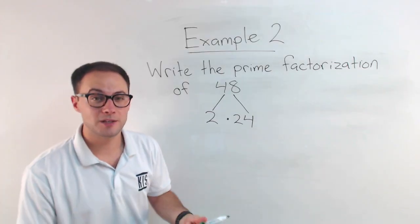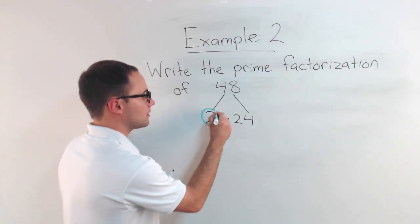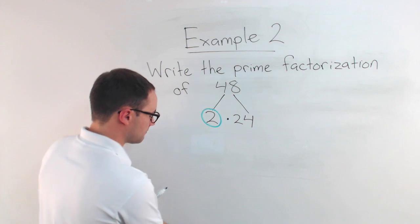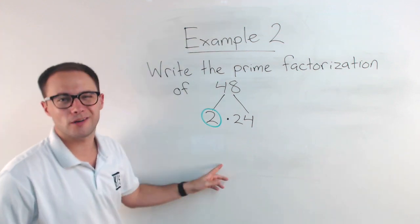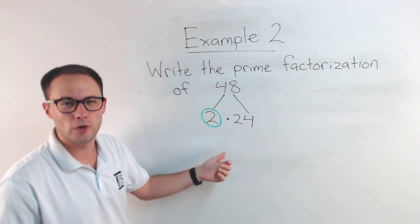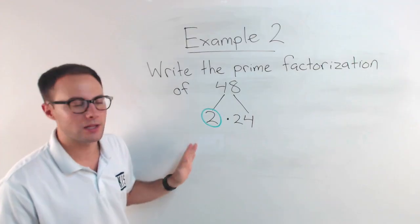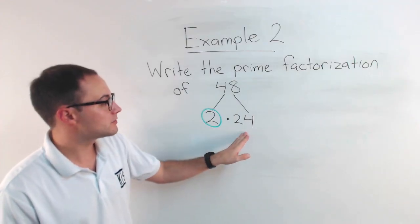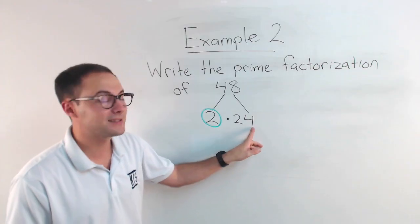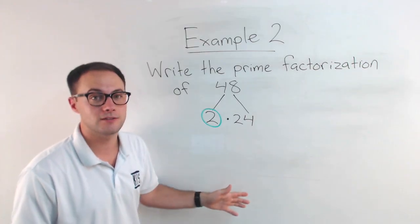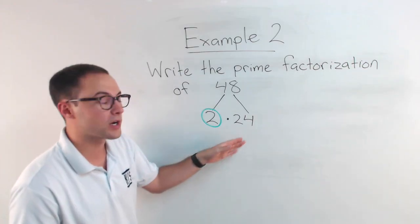Well, two is a prime number. So that's done. We're not going to factor that anymore. You really can't unless you just do two and one, but that's not going to help anything. So we're done with that. 24 isn't prime. It's composite. It still has other factors besides one in itself. So we're going to keep going.